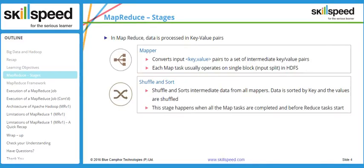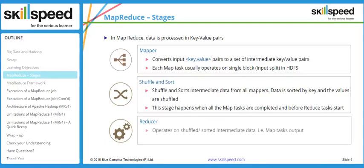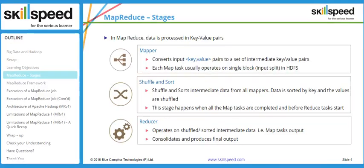This stage happens when all map tasks are completed and before the reduce phase starts. The third phase is the reducer phase. The output of the shuffle and sort phase is given as input to the reducer, which performs an aggregation job. You write a separate piece of code that operates on the shuffle and sort output. Usually the reducer is presented with fewer individual keys and large values, and depending on your business logic, you can perform any type of operation.